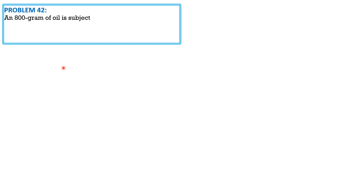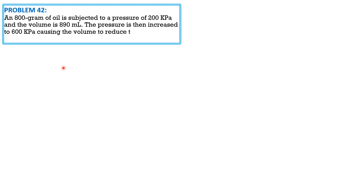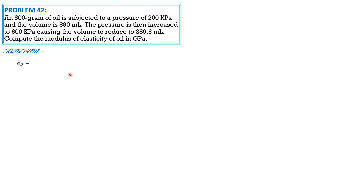Problem 42: 800 grams of oil is subjected to an initial pressure of 200 kPa with a volume of 890 mL. The pressure is then increased to 600 kPa, causing the volume to reduce to 889.6 mL. Compute the bulk modulus of elasticity of oil in gigapascals. We set up the equation in terms of density change: bulk modulus E_b = ΔP / (Δρ/ρ), with no negative sign since density increases when pressure increases.